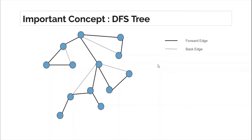This was part one of the finding bridges lecture. Just think about this DFS tree. In the next lecture we are going to take an example and see how, using a low array and an in array, we can find the bridges in a given graph. Till the next video drops, think about the DFS tree and its different properties. Thank you guys for watching — keep coding!